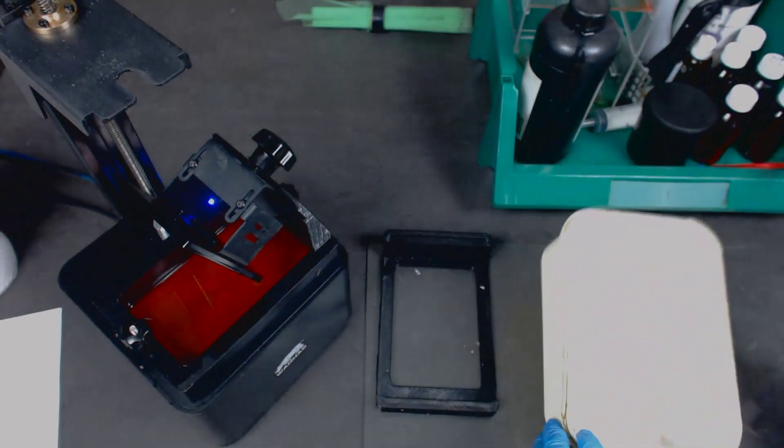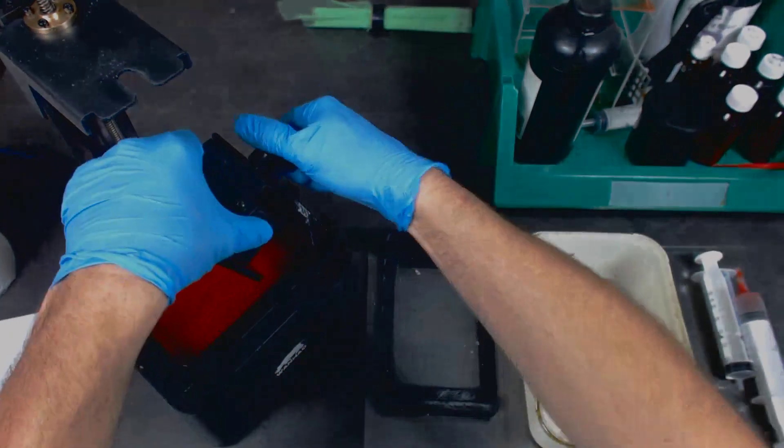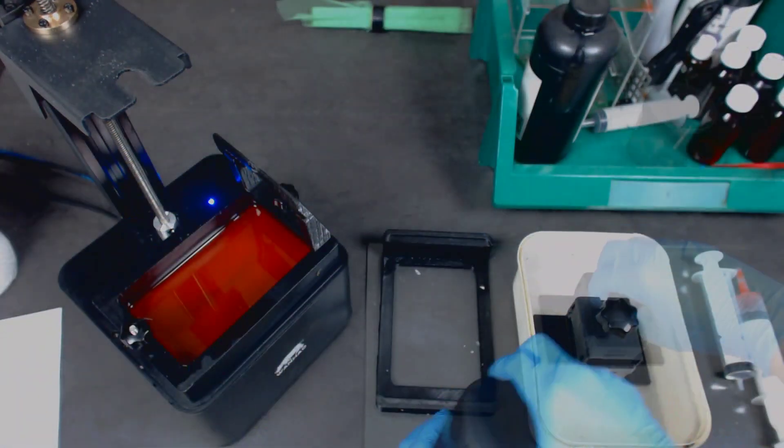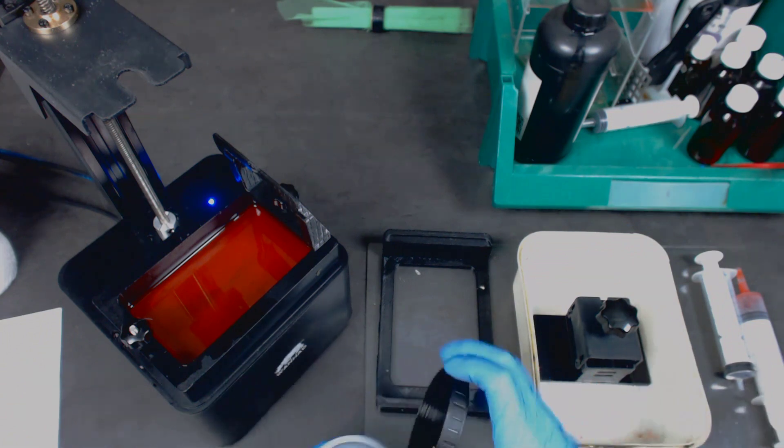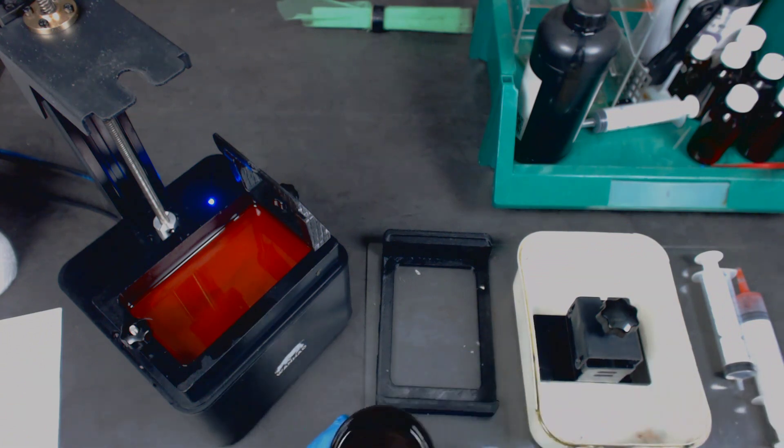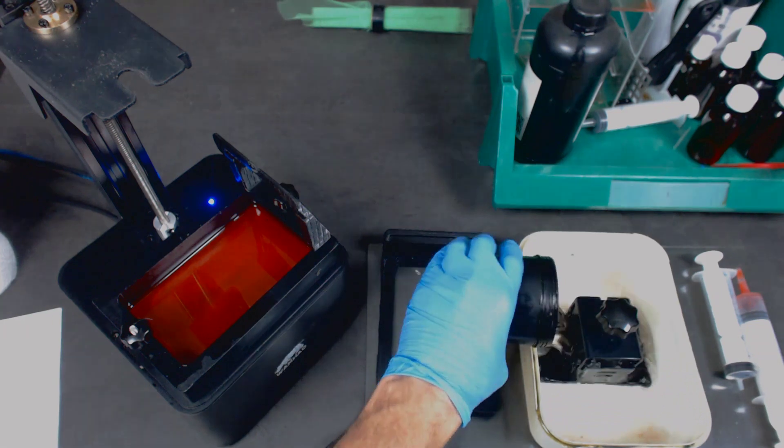To clean the build plate, I use a plastic container like this one, which is an ice cream tub, with enough IPA to cover the build plate. I use old IPA to do this, usually something that's already been used to clean parts.